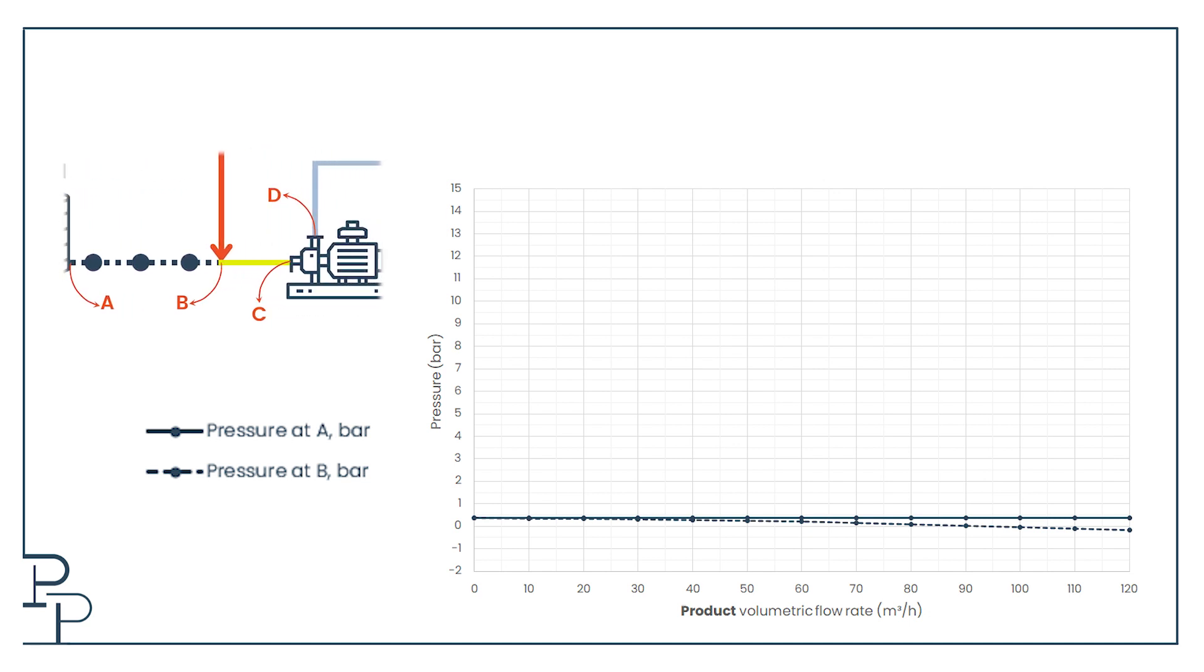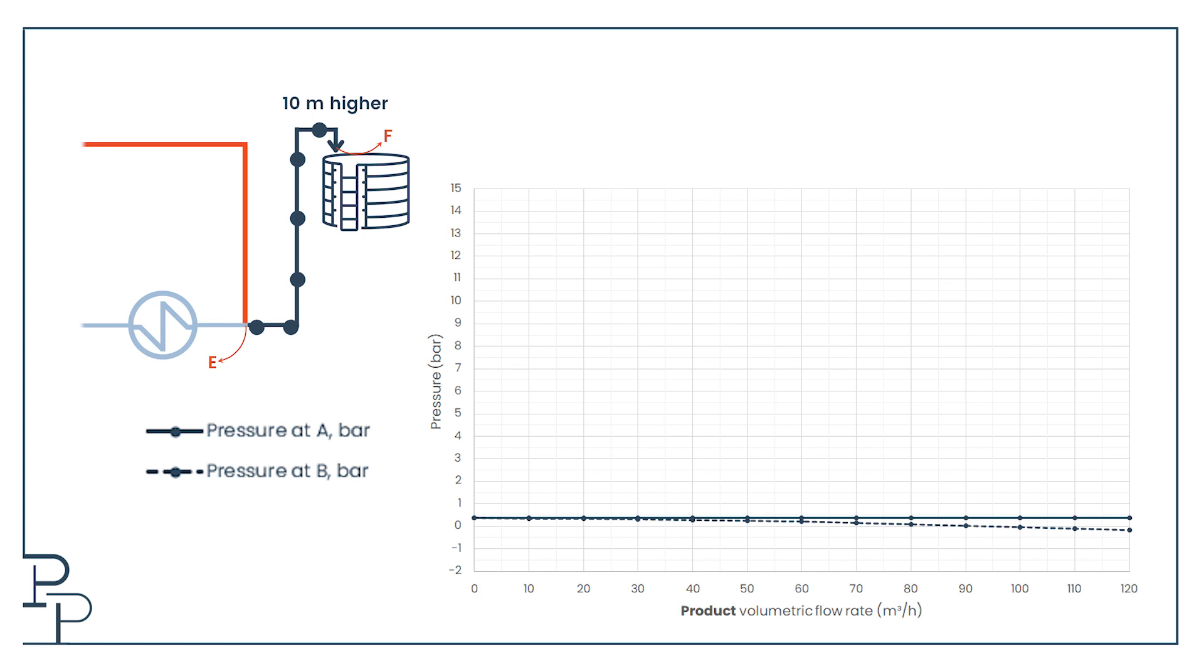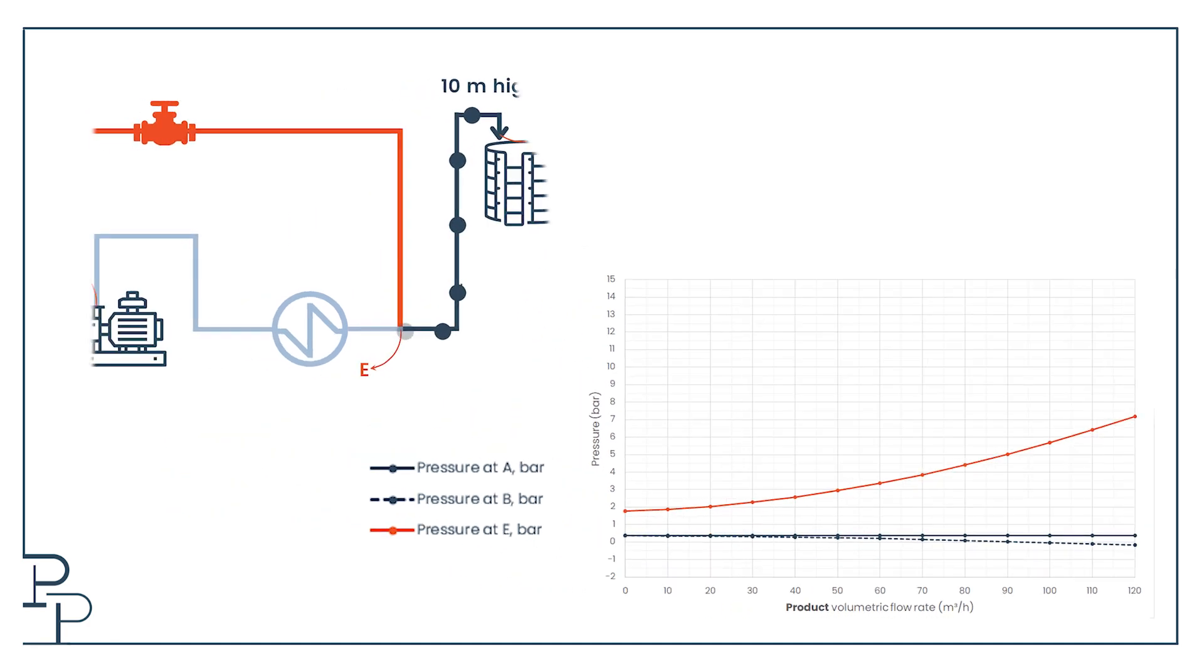Next it would be nice to calculate the pressure at C, but we simply can't do it because we're using the product flow as the basis of our calculation. We don't know what the recycle flow is and hence we don't know the flow rate through portion BC nor do we know the flow rate through DE at the discharge of the pump. It's only the pressure at point E we can calculate because the flow rate through EF is the product flow rate again after the recycle has branched off. Because point F is at atmospheric pressure, the pressure at E is equal to the pressure drop across EF. You'll notice that it starts at 1.8 bar because unless I have 1.8 bar, there is no way I can elevate sulfuric acid to a height of 10 meters.